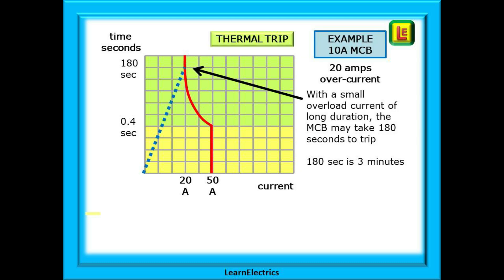Looking at a simple drawing of the thermal trip part we've used a 10 amp type B MCB as an example. This can be followed on page 370 of the wiring regs book if you wish.